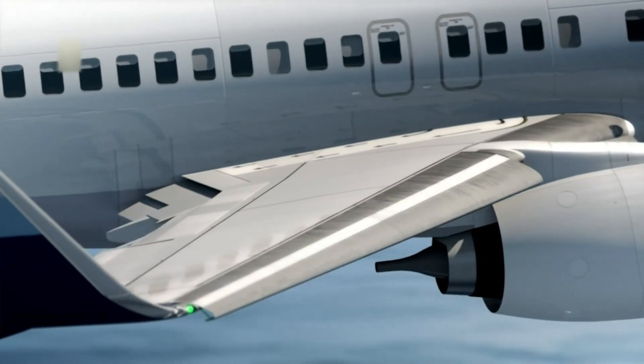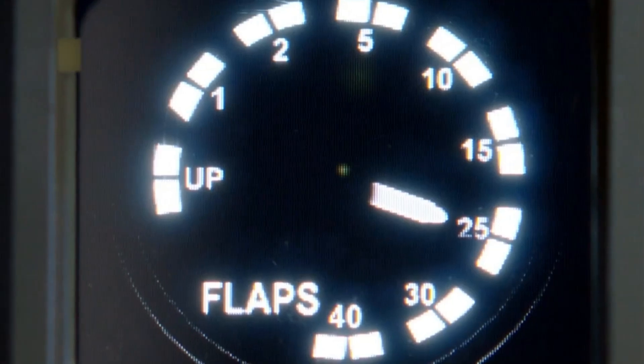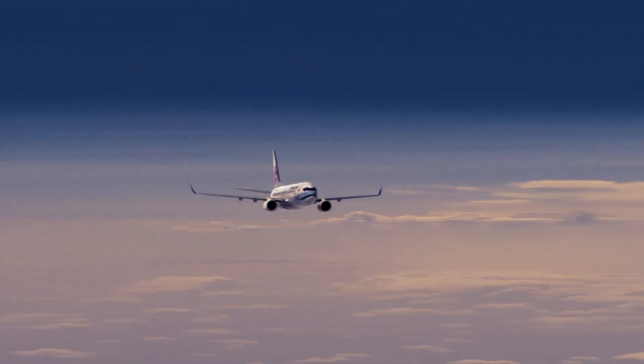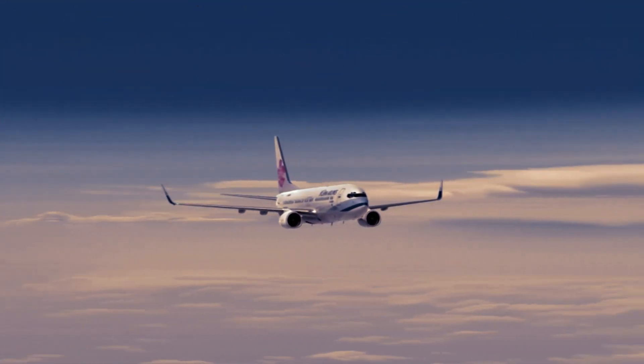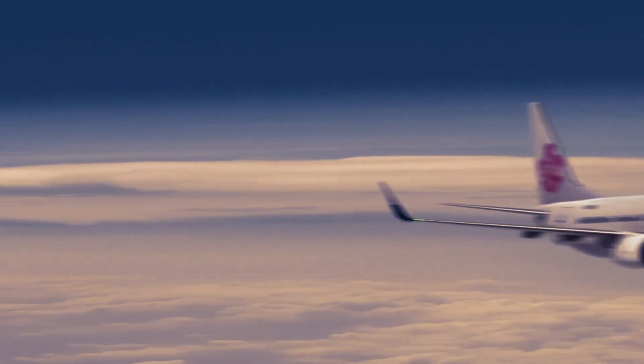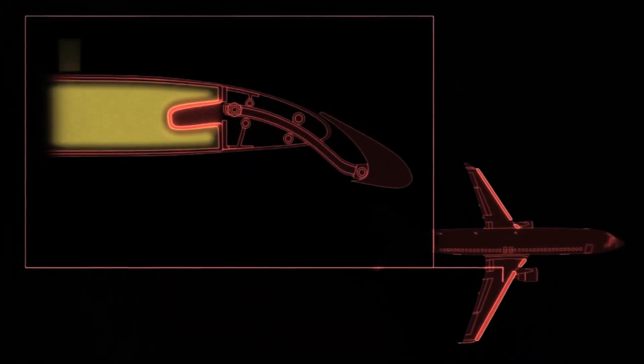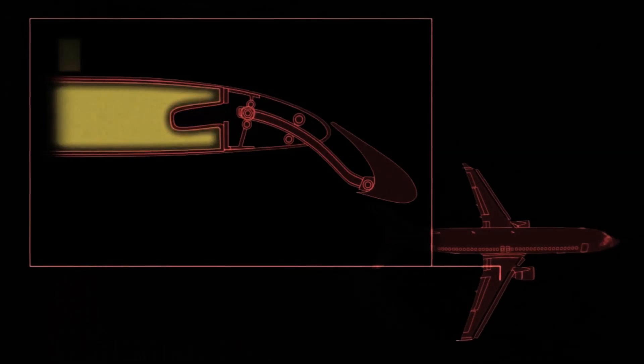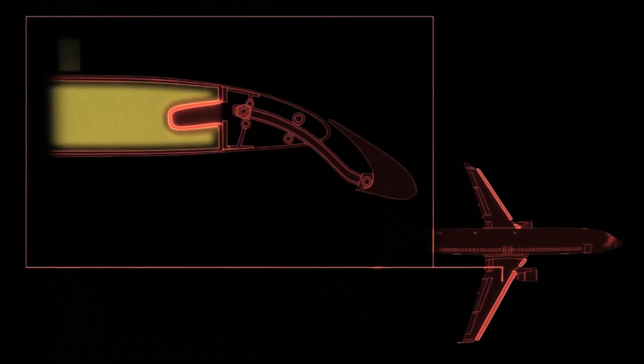Flaps are found on most aircraft. They are usually inboard on the wing's trailing edges adjacent to the fuselage. Leading edge flaps are also common. They extend forward and down from the inboard wing leading edge. The flaps are lowered to increase the camber of the wings and provide greater lift and control at slow speeds.